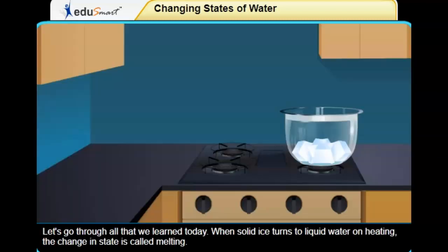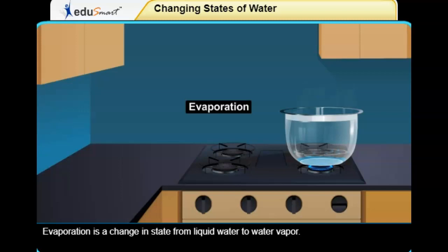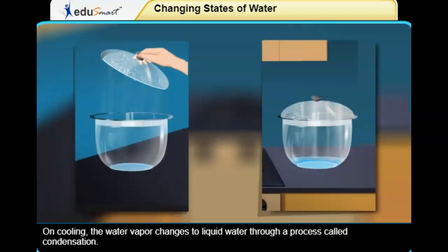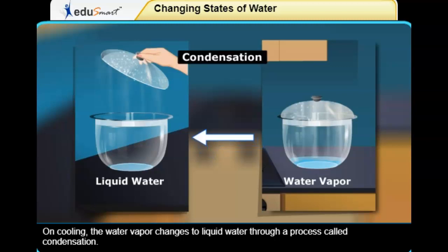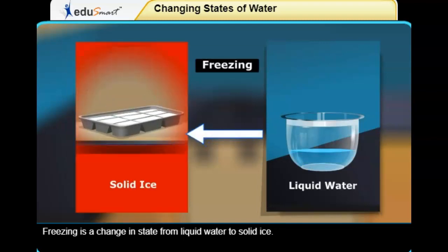Let's go through all that we learned today. When solid ice turns to liquid water on heating, the change in state is called melting. Evaporation is a change in state from liquid water to water vapor. On cooling, the water vapor changes to liquid water through a process called condensation. Freezing is a change in state from liquid water to solid ice.